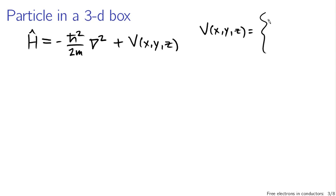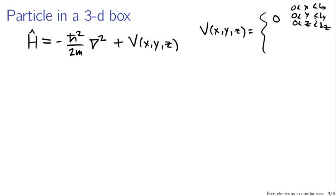The potential V(x, y, z) is equal to zero if we're inside the box — that happens for x between zero and Lx, y between zero and Ly, and z between zero and Lz. So if x is between zero and Lx, y is between zero and Ly, and z is between zero and Lz, the particle is officially in the box and the potential energy function is zero. We say the potential energy is infinity outside the box to enforce that the particle always stays inside.